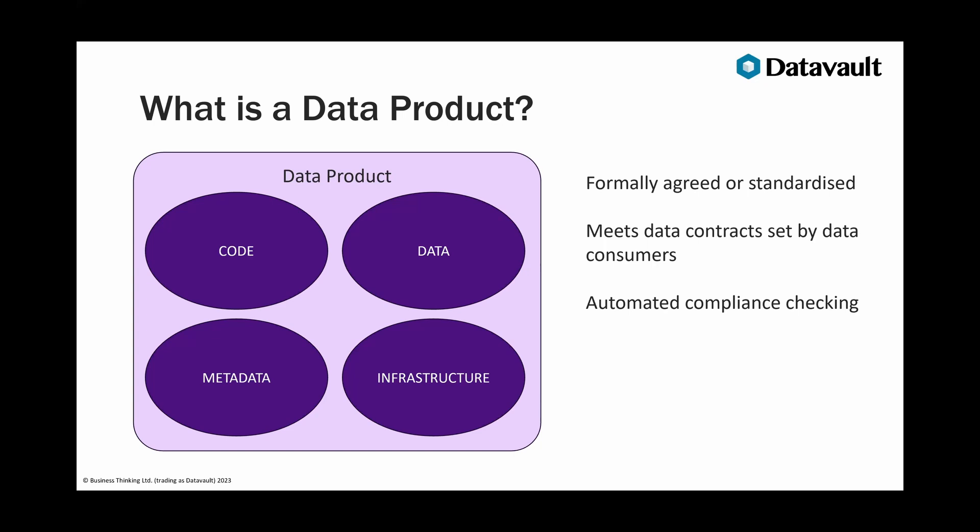A ThoughtWorks case study showed a client who had something like 60 reports, and they ended up with just four data products satisfying all 60 reports. Keeping the numbers right down to small numbers is the way forward.